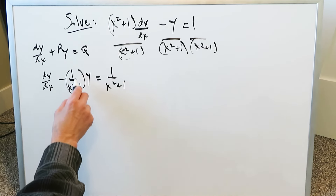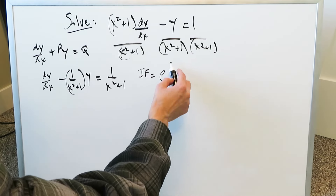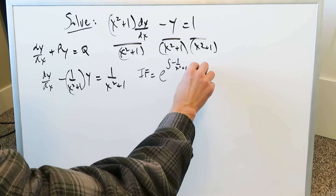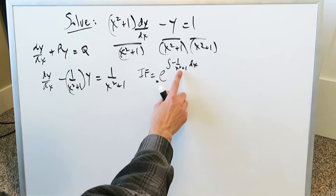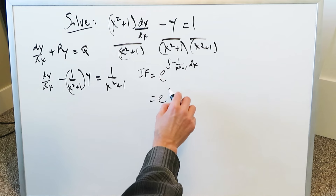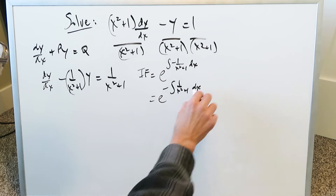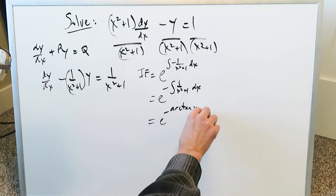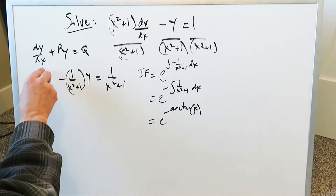Your p value is minus 1 over (x squared plus 1). Your integration factor has to be determined: e to the exponent of the integral of minus 1 over (x squared plus 1) dx. You know that 1 over (x squared plus 1) brings in the arctan antiderivative. With the minus, you're really looking at e to the minus arctan x. That is your integration factor.